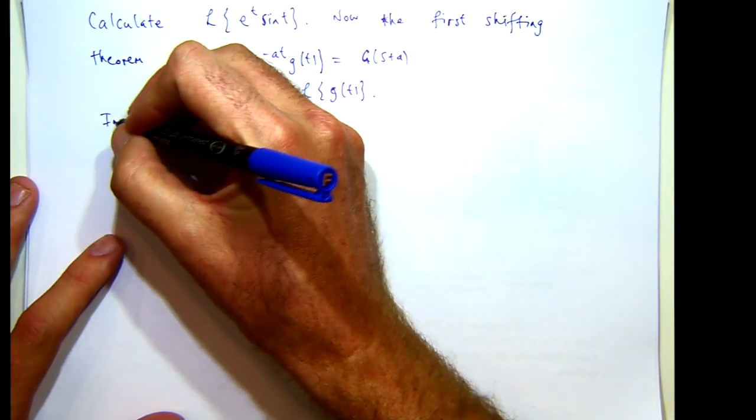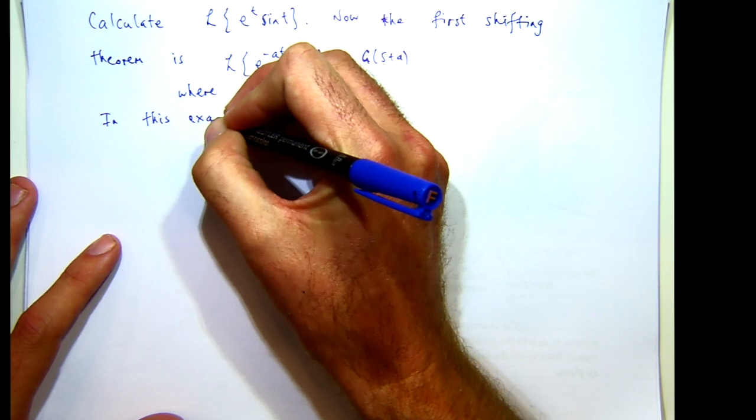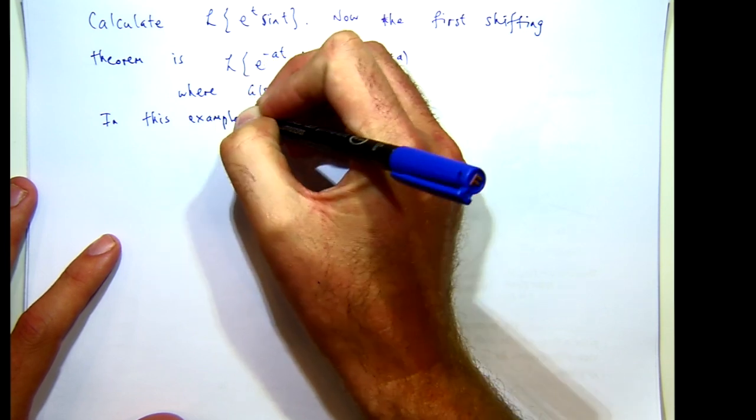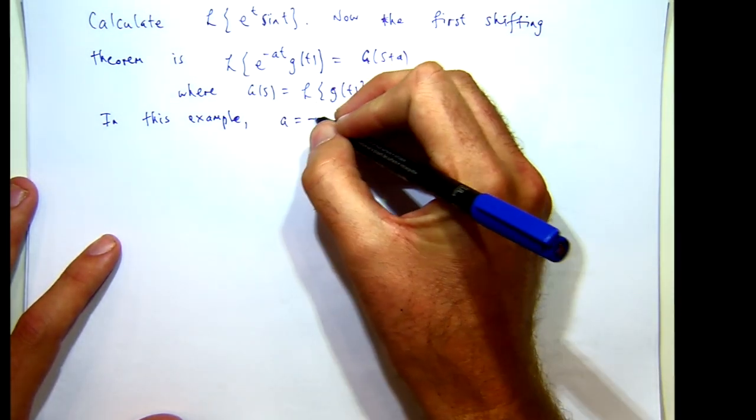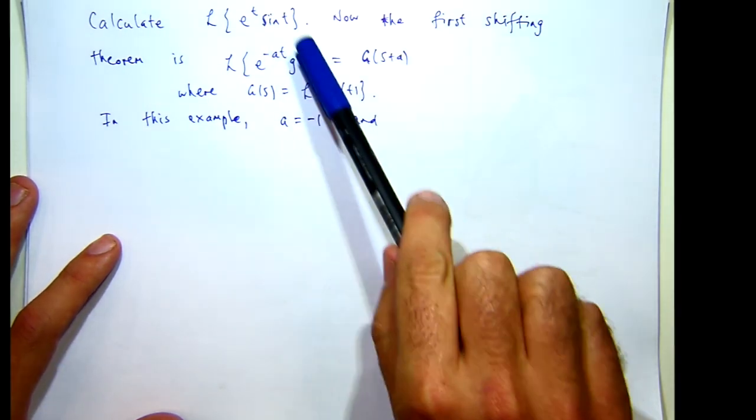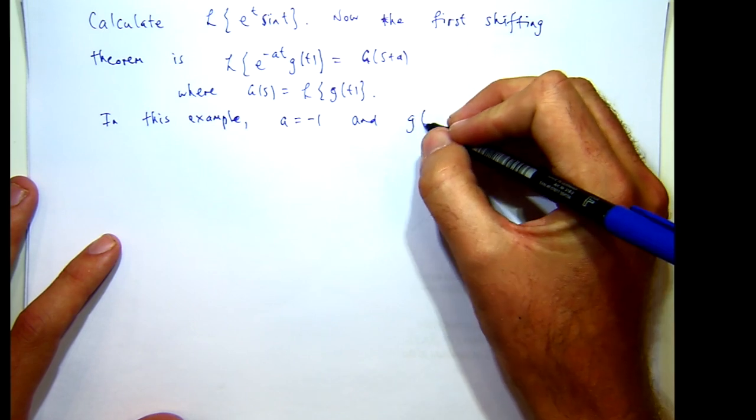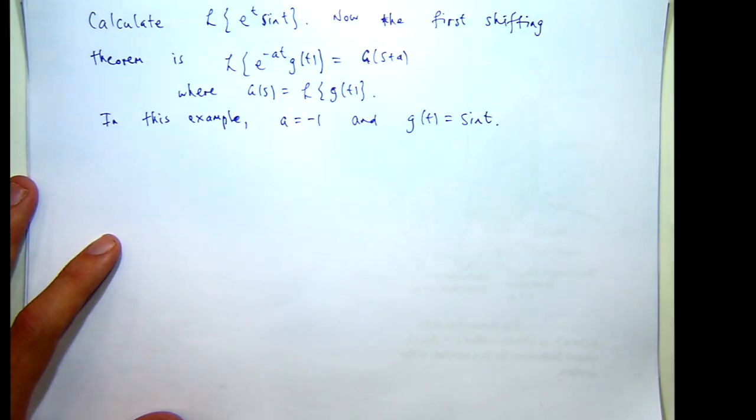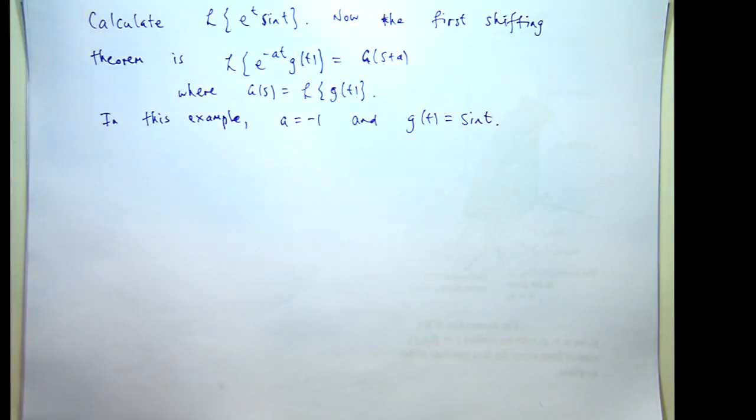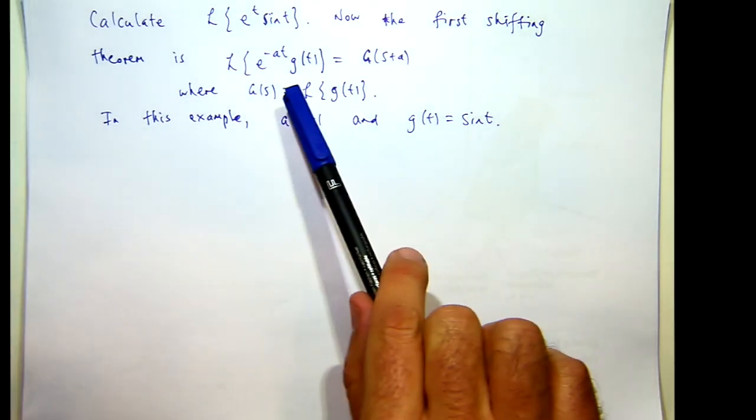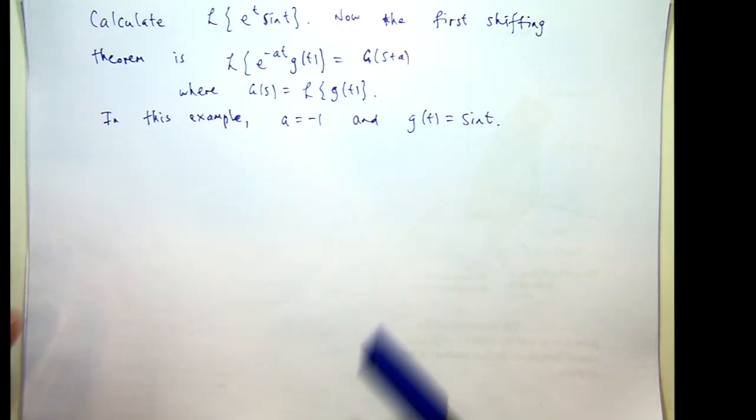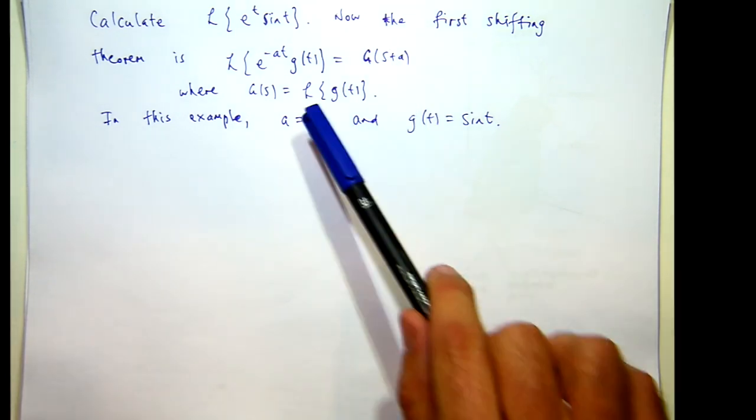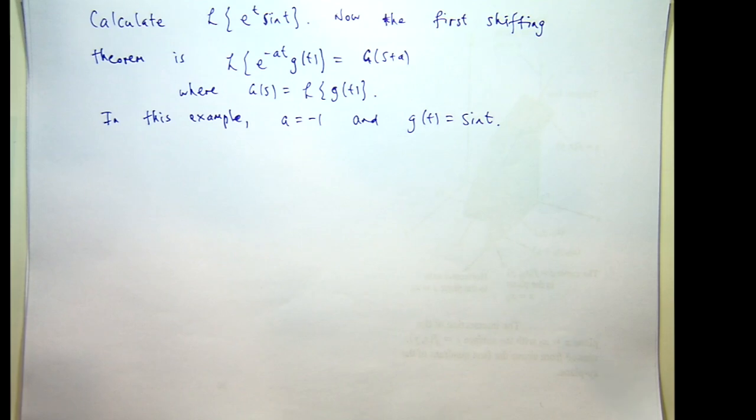In this example a would be negative one and little g of t would be sin(t). So let's calculate the transform of our little g of t and then shift it a unit, so we'll basically replace s with s plus a, essentially s with s minus one.